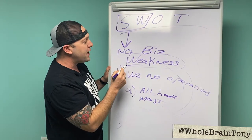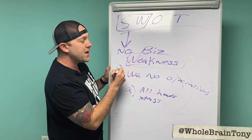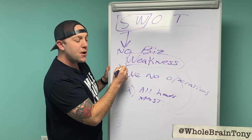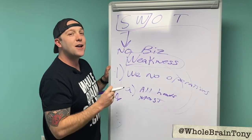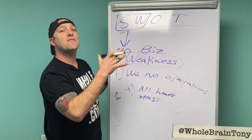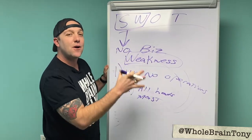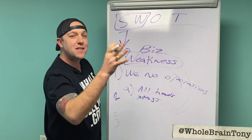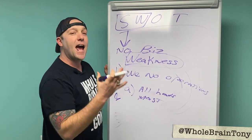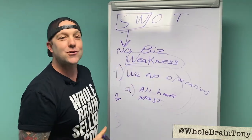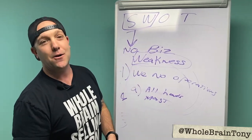You see how we took something that could have been our weakness and made it a strength, and taken what their strength is and turned it into a weakness? Here's the killer: when the competitor brings up our weakness, not only does it have zero value to them when they're presenting, but it actually hurts their sale.